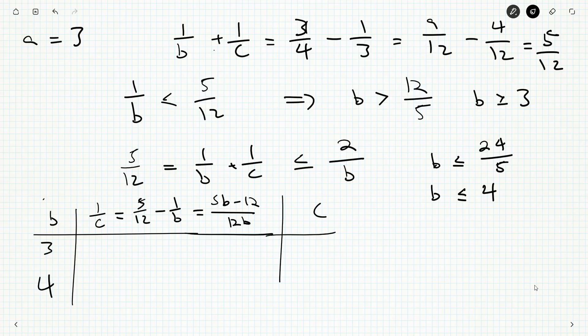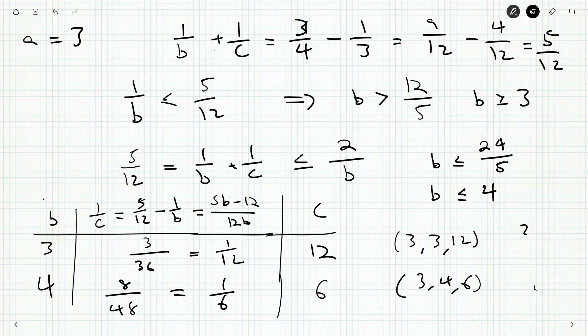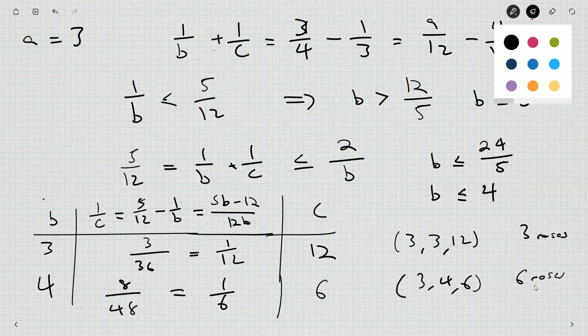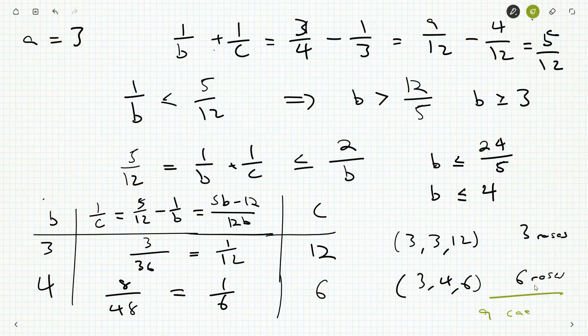We cross multiply. We'll see that B has to be less than or equal to 24 over 5. So this is just under 5, so B has to be less than or equal to 4. So B could be either 3 or 4. We'll get 15 minus 12 is 3 over 12 times 3 is 36. So that'll be 1 over 12. C will be 12. Or we're going to have B is 4, and that'll be 20 minus 12, which is 8 over 12 times 4, which is 48. And that'll be 1 sixth. So C will be 6. So we get 3, 3, and 12. Or we get 3, 4, and 6. Once again, we've got 3 cases and 6 cases. So that's 9 in total on this page. And that's 24 in total.